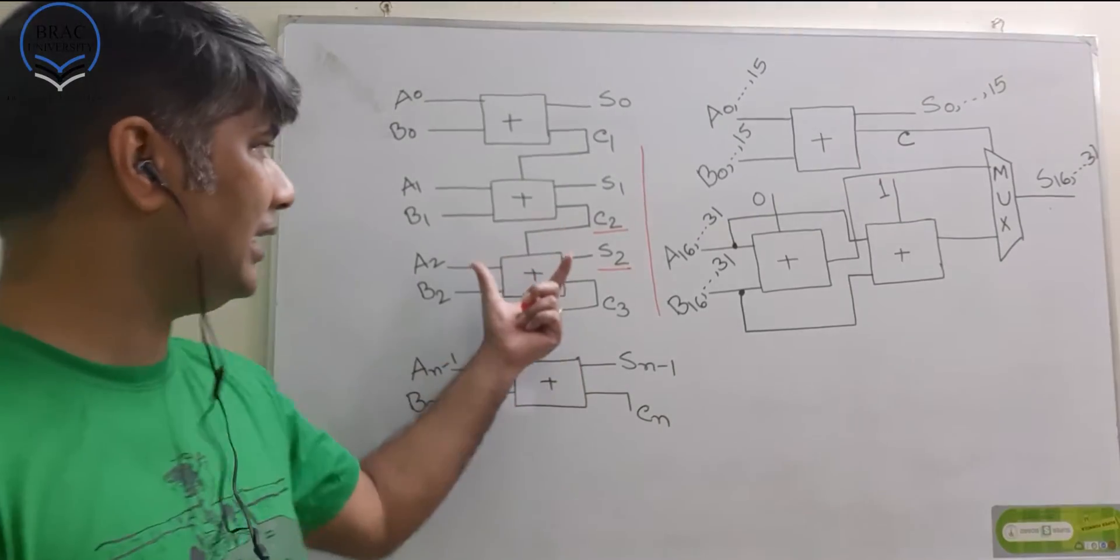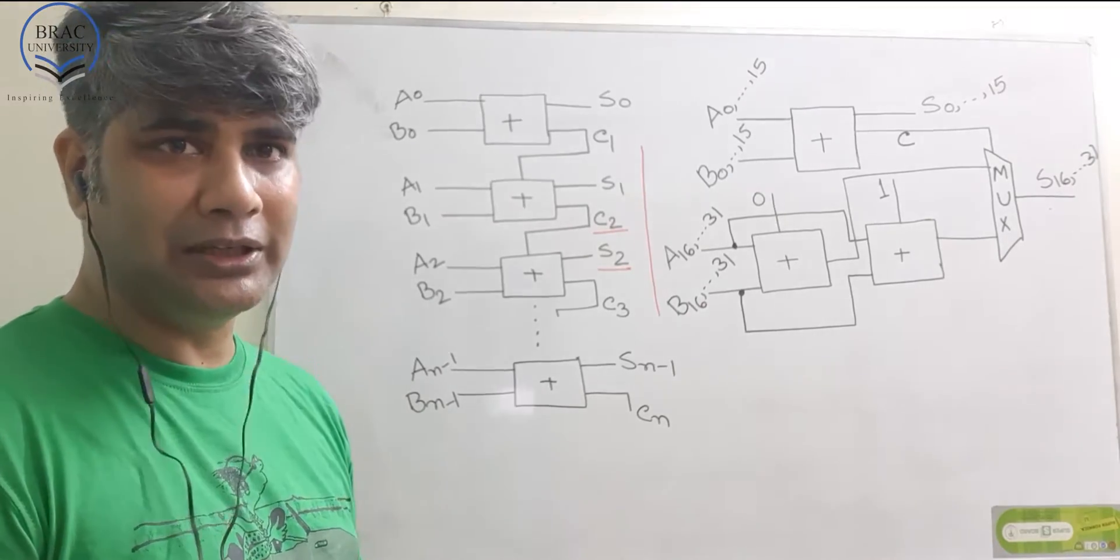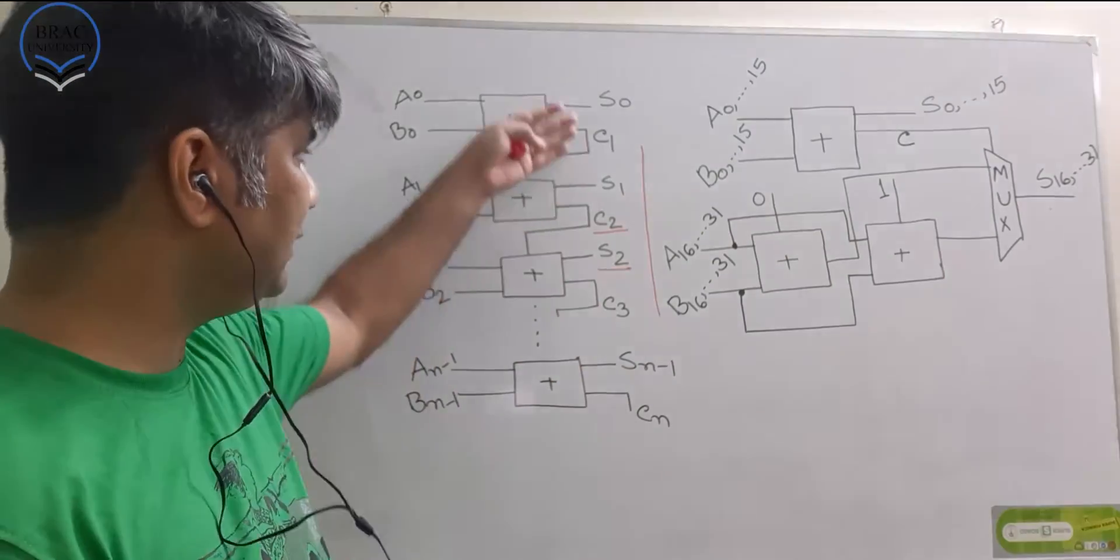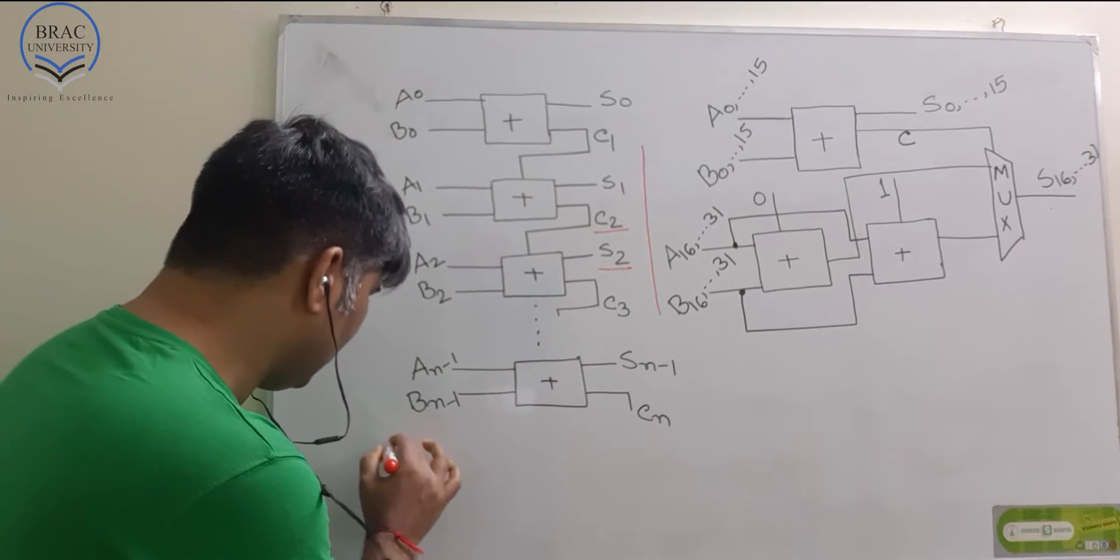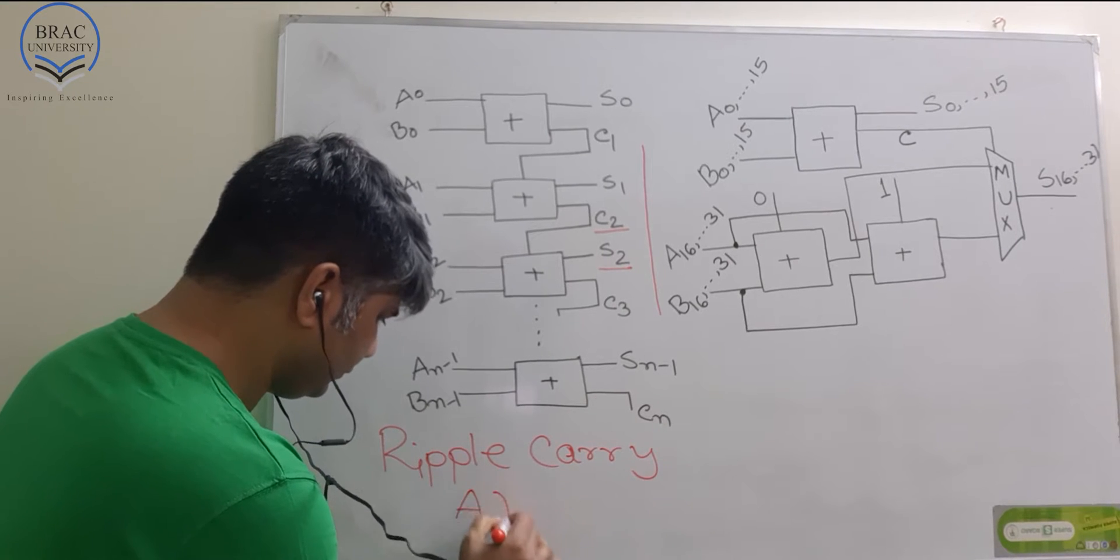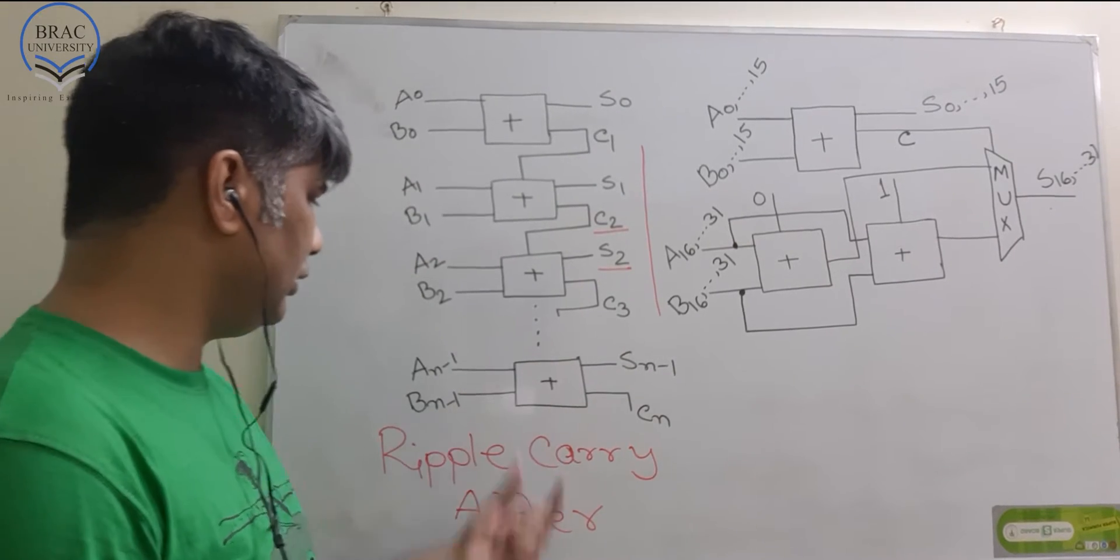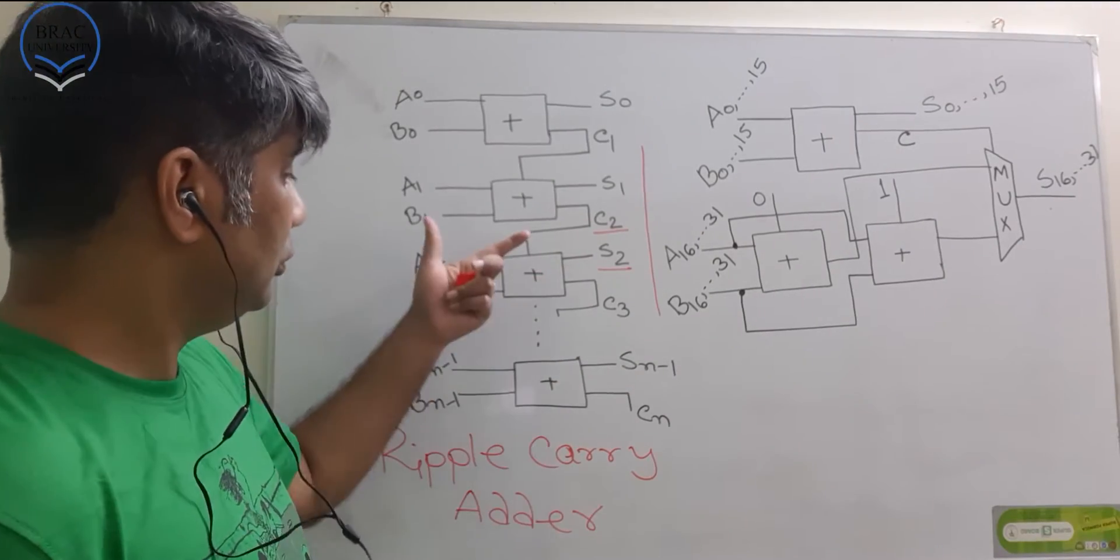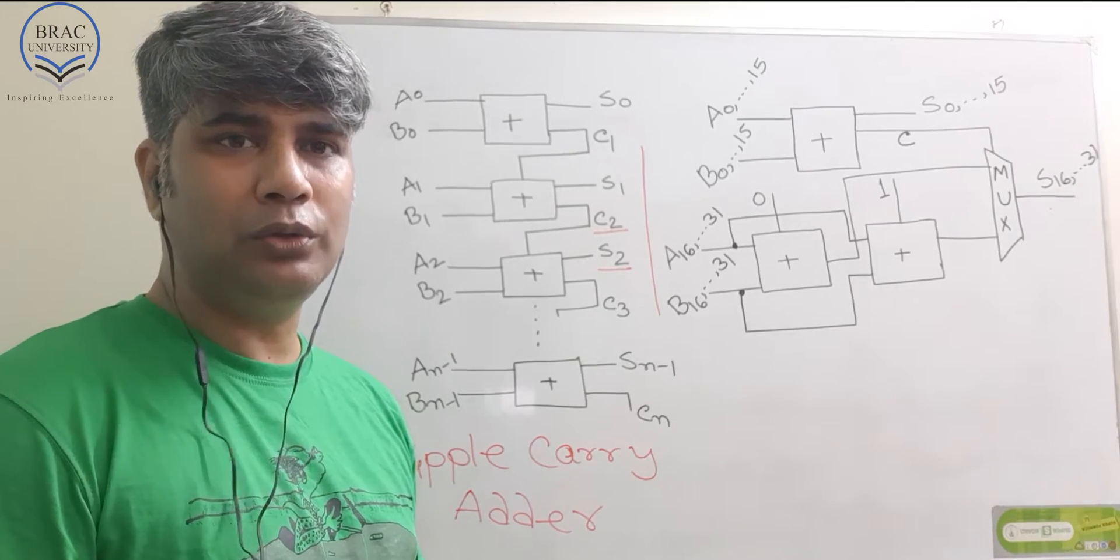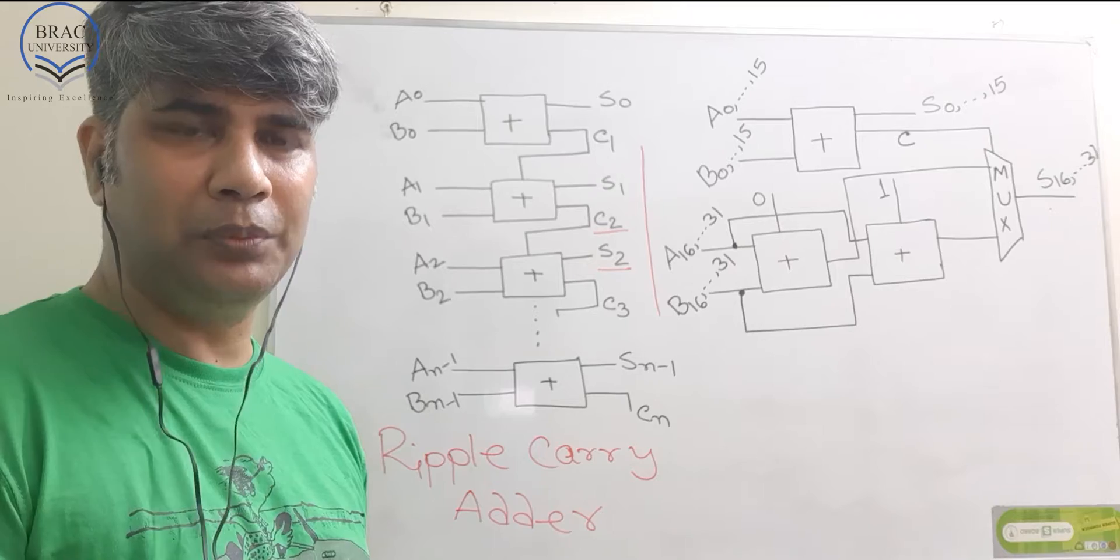Now, this adder has a name. The name of this adder is Ripple Carry Adder. You can relate the name with the operational principle of this adder. That means carry, they just propagate. As I just said, the last box has to wait for the carry of the second last box, which means this is not very effective when we are trying to perform fast addition or perform fast calculation. That's the objective of using computer.